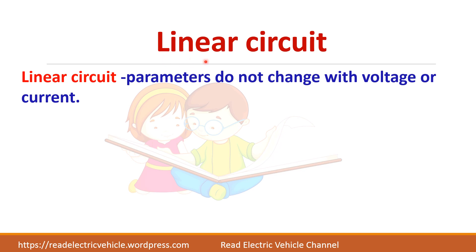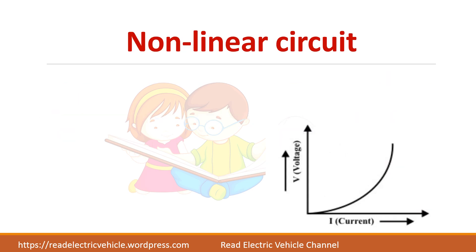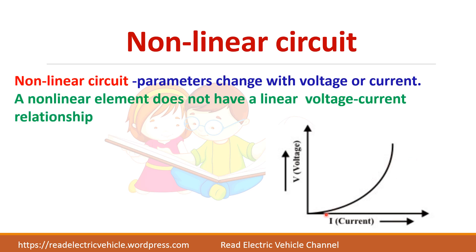The next category is linear and non-linear elements. In a linear circuit, the parameters do not change with voltage or current. For example, a resistor has a linear V-I relationship. In the case of a non-linear circuit, such as a diode, it does not follow a linear relationship, so these are called non-linear elements.